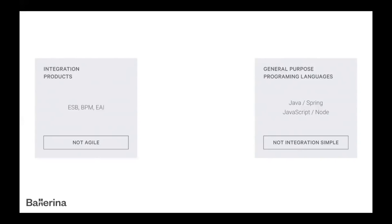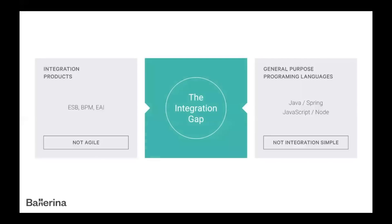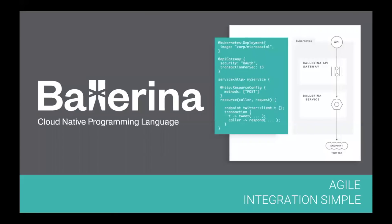The other approach is to take a general purpose programming language and build distributed systems. You either write the code yourself to handle those error cases, or you import a framework. We believe general purpose languages are perhaps not as integration-simple as they could be, and integration products are not as agile as they could be. We call this the integration gap. We decided that perhaps one way of solving that was to create a language that inherently addresses integration, distributed computing, and network computing concepts — but is a full language that fits well into an agile development process. That's Ballerina.